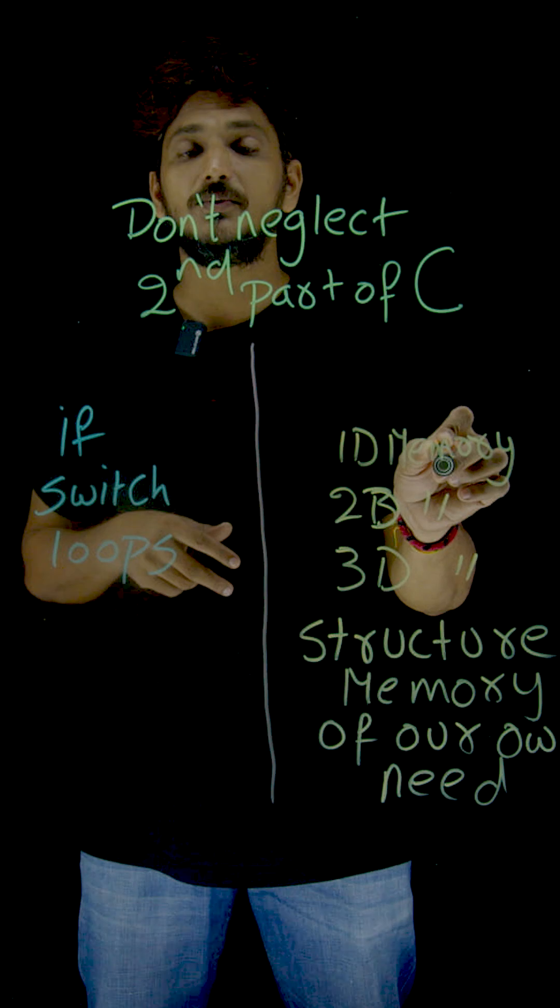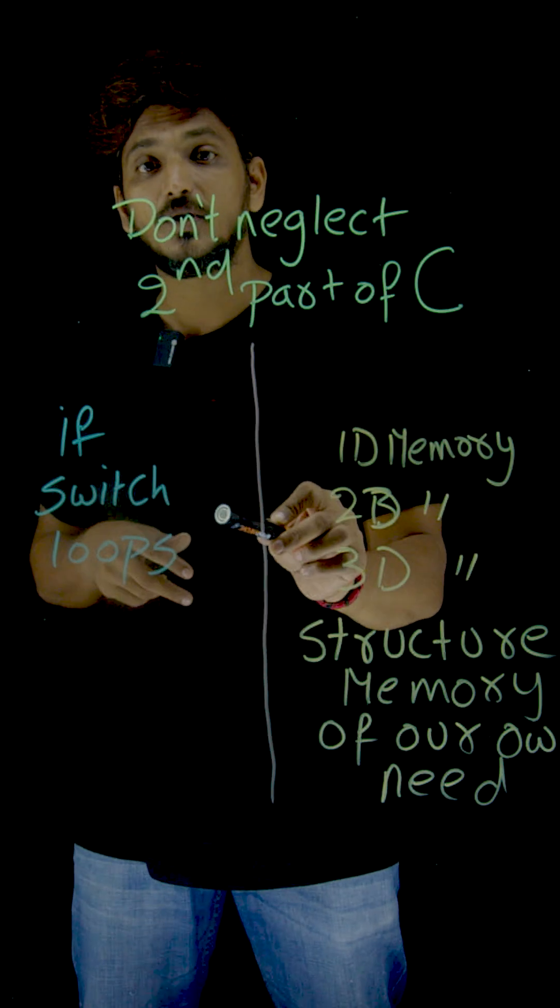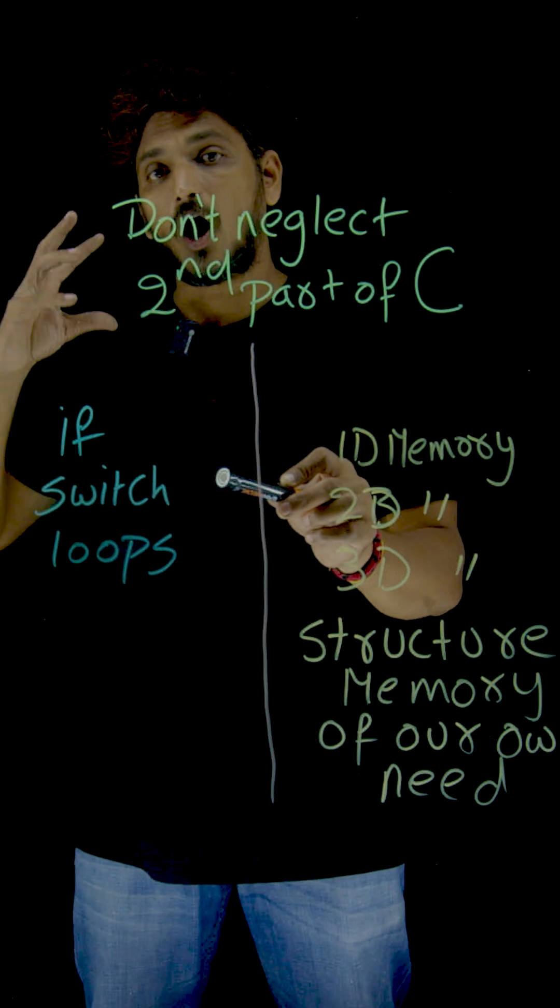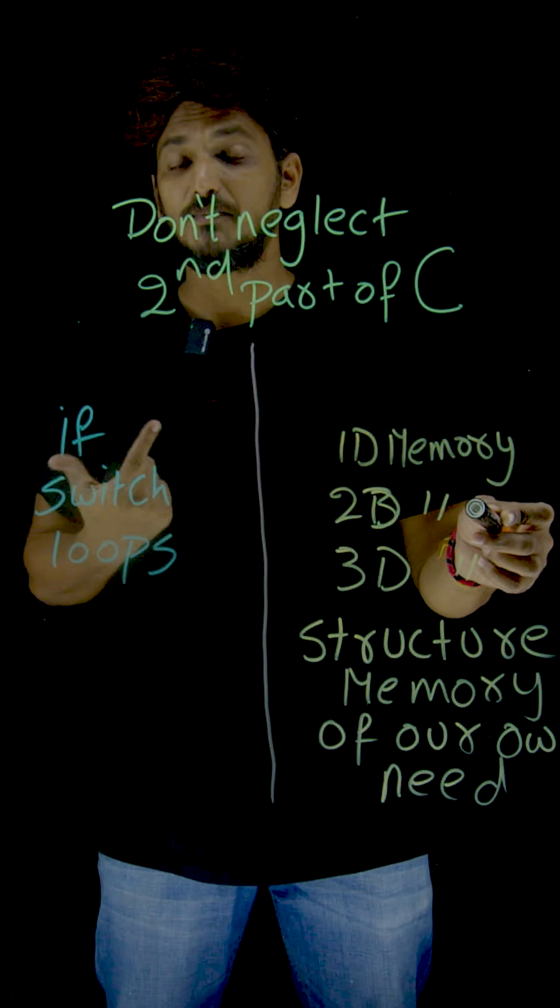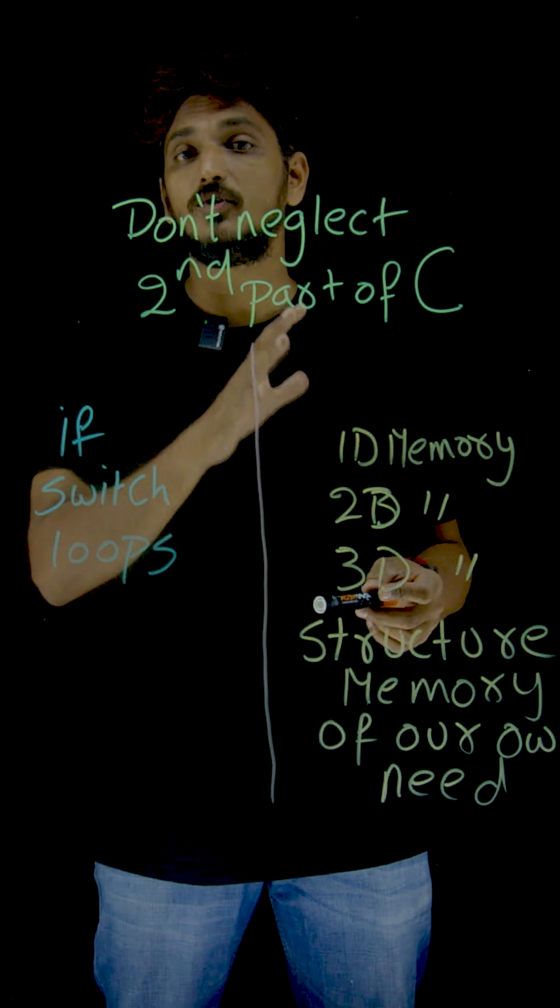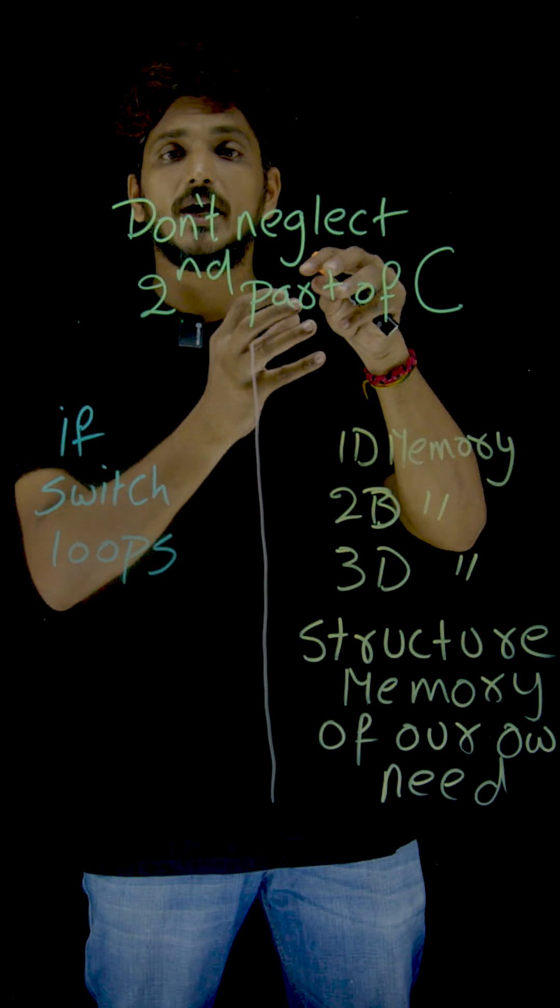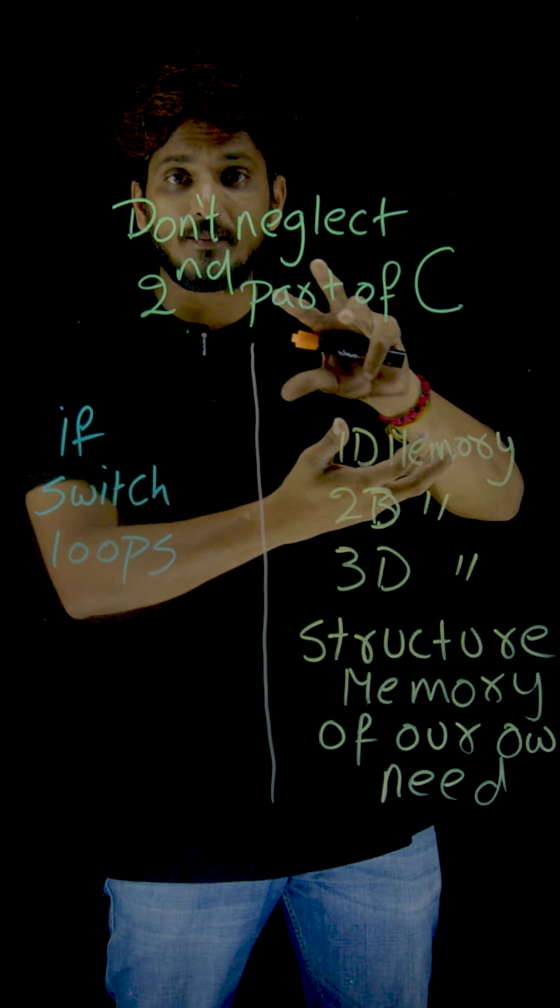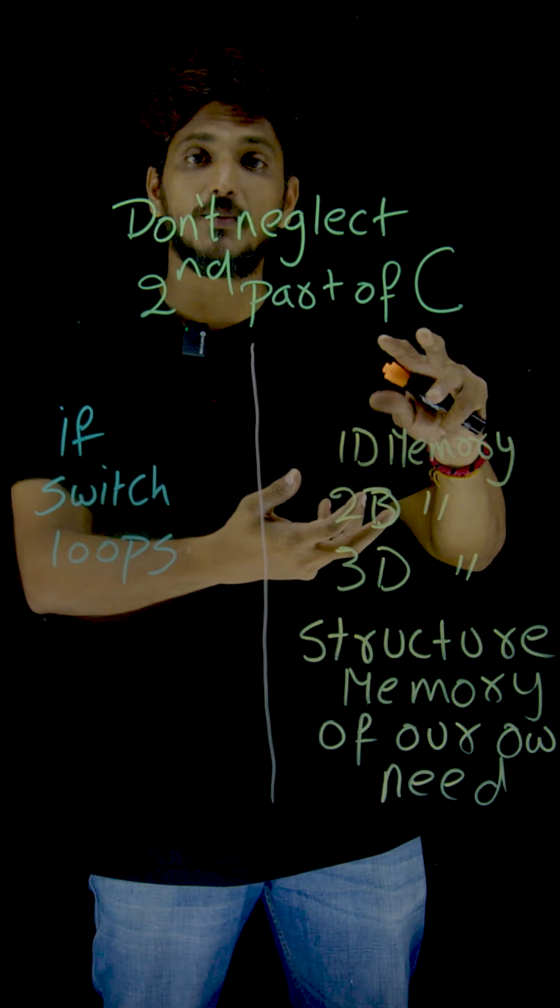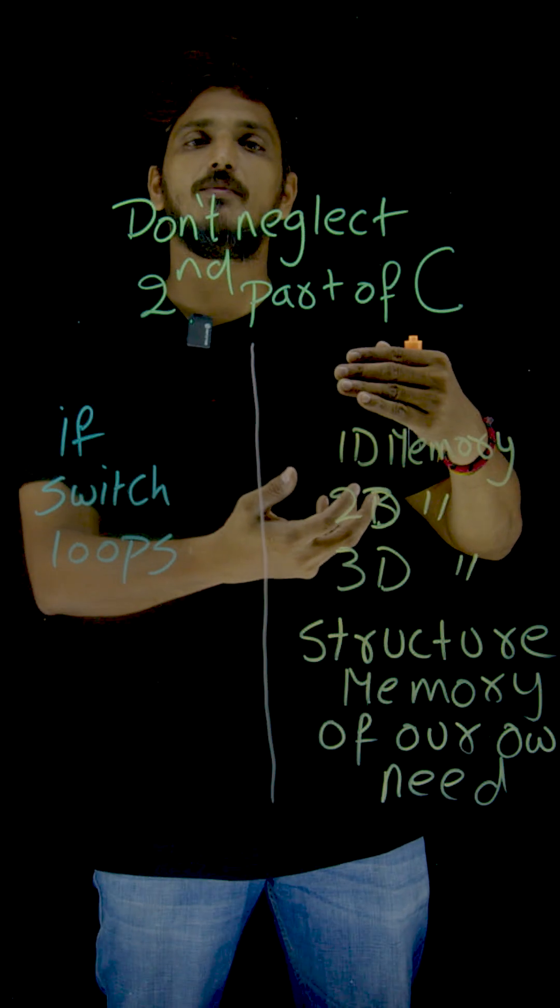In the second part of C programming, in the first part we discussed about how to build logic. In the second part, we are going to discuss about how we can store data in single-dimensional memory, two-dimensional memory, three-dimensional memory, and n-dimensional memory.